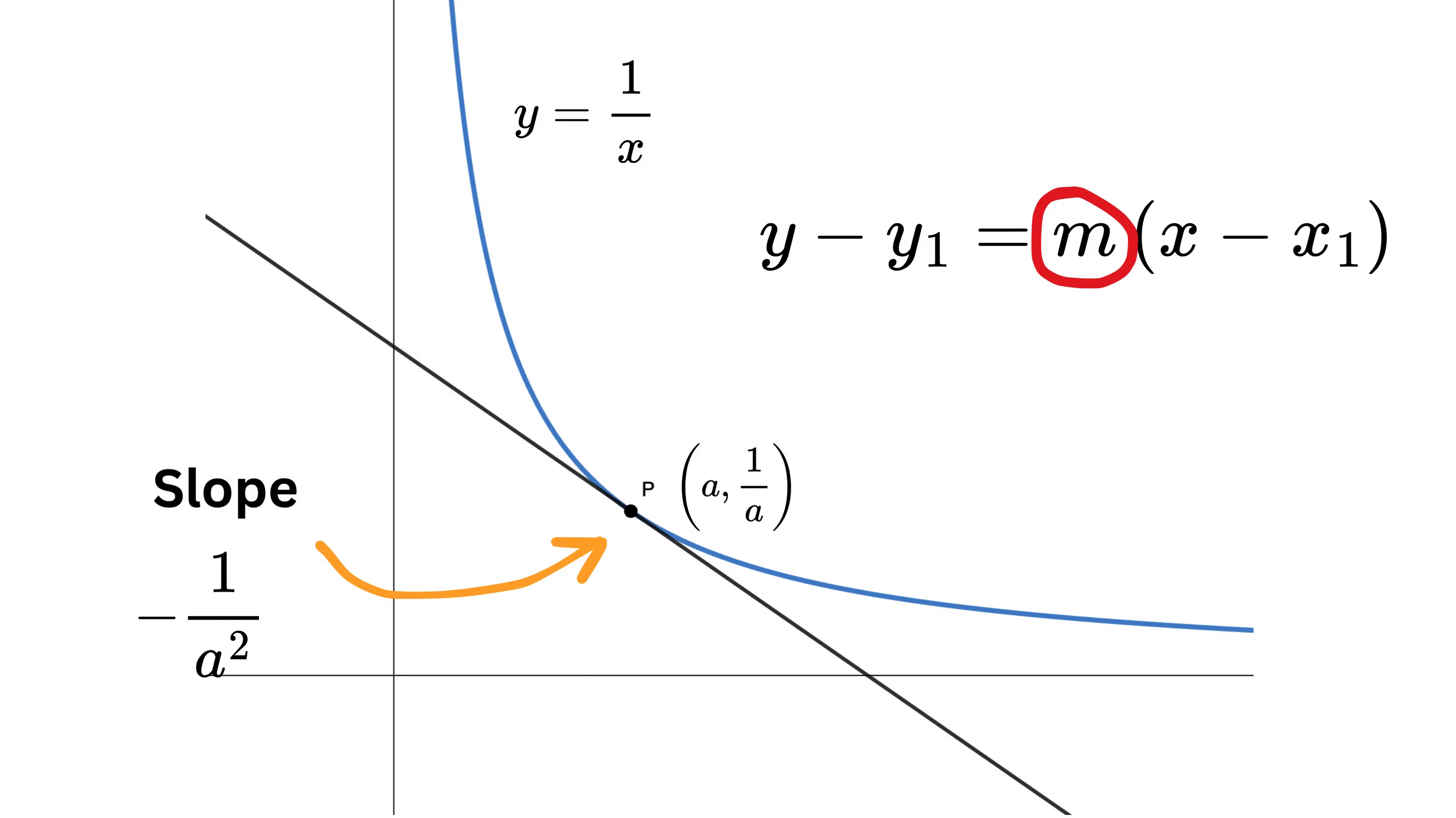So, substituting m as minus 1 by a square, x1 as a, and y1 as 1 by a, we get the equation of the tangent as y minus 1 by a equals minus 1 by a square, multiplied by x minus a. Expand this to get minus x over a square, and this will become plus 1 over a. Take this one over a here to get y as minus 1 over a square, x plus 1 over a plus 1 over a, or 2 over a.